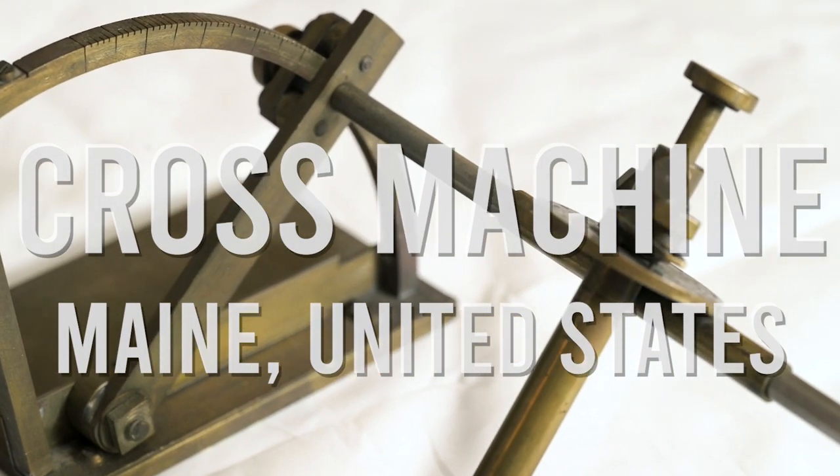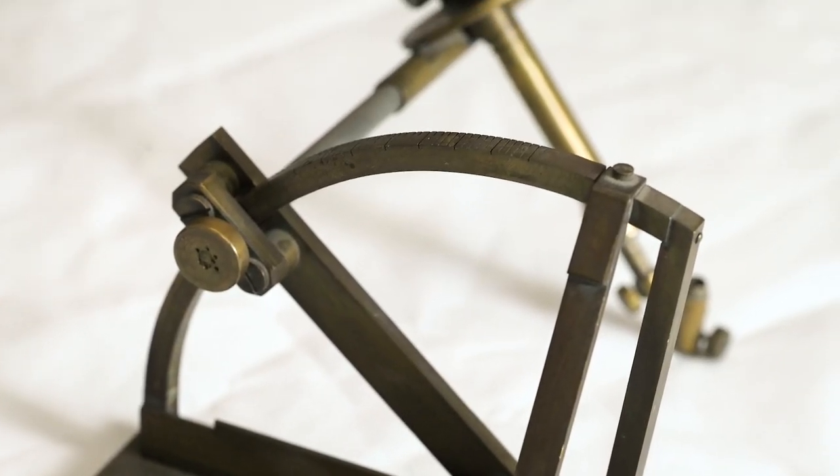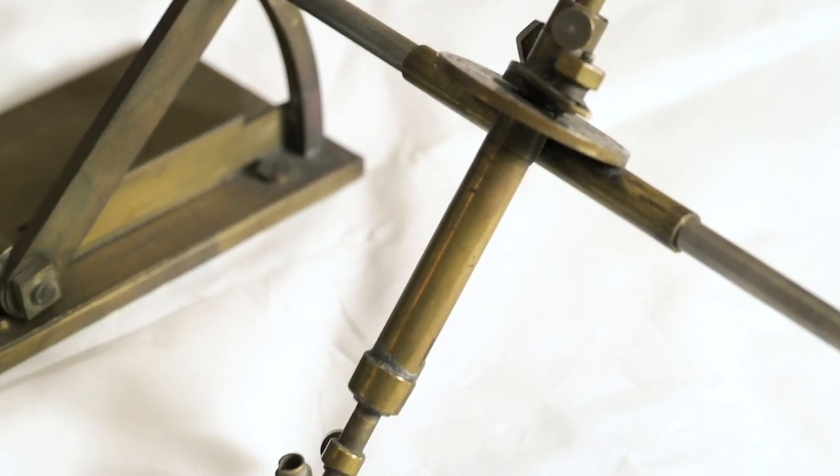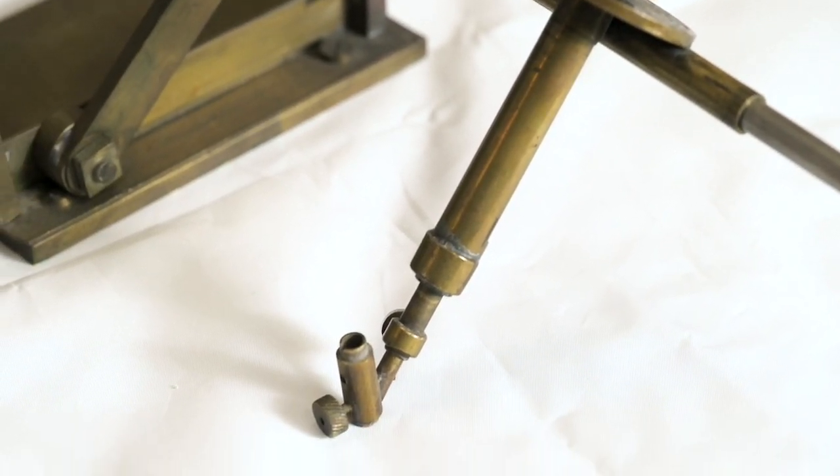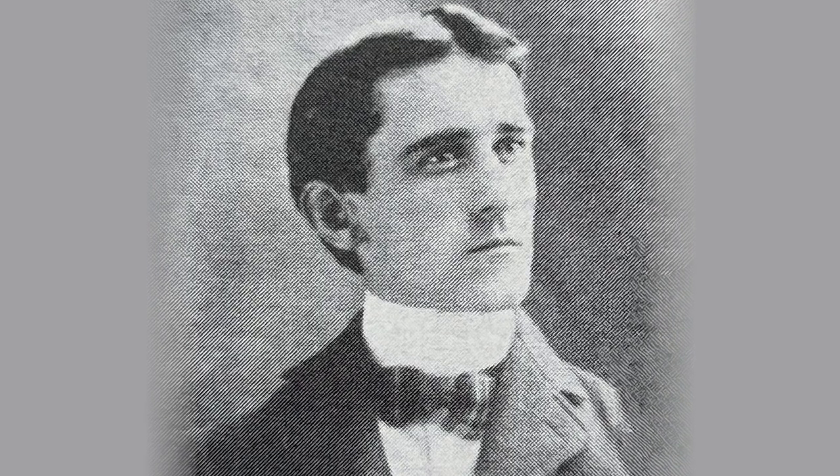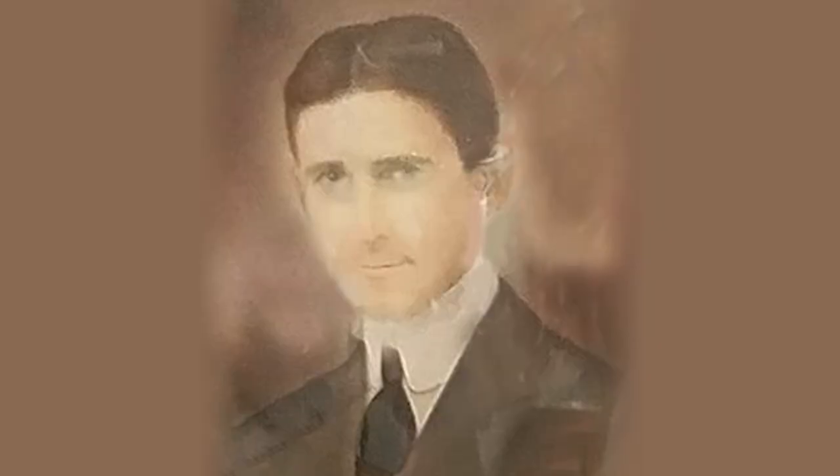Welcome back to another exhilarating episode of World of Faceting Machines. Today we're looking at an early American faceting machine built by William Cross of Portland, Maine. William Cross was a manufacturing jeweler who opened his workshop in Portland, Maine in 1908. His workshop built a lot of their own jeweler's tools, so it's likely that they built this machine in-house.